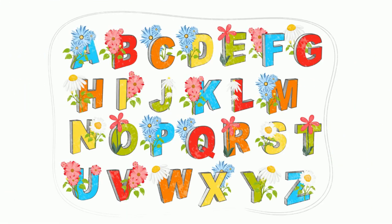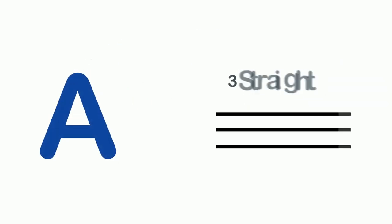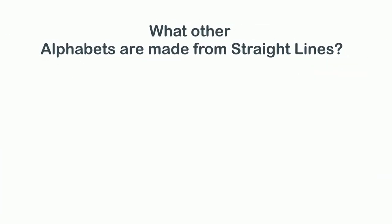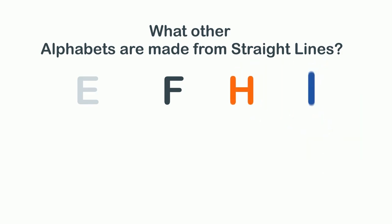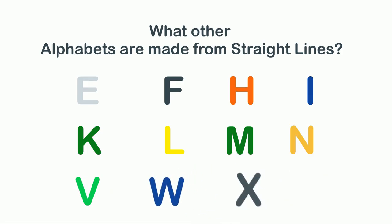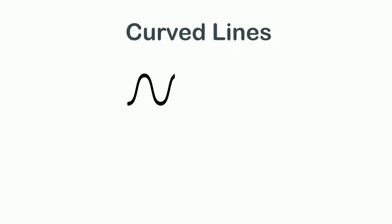If you look at the alphabets, you will notice that some are made from straight lines, some from curved lines, and some from both. For instance, A is made from three straight lines, T is made from two straight lines, Z is also made from three straight lines. Other alphabets made from straight lines are: E, F, H, I, K, L, M, N, V, W, X, and Y.